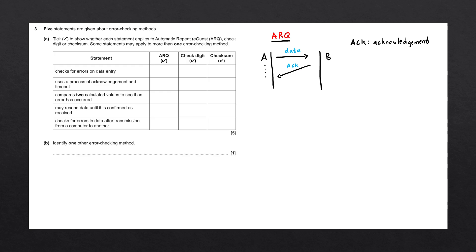If the timer expires, we get what's known as a timeout. If the timeout is reached, A is going to send back the exact same packet of data to B, as it assumes that B did not receive the correct information or the packet got lost during transmission. This process repeats until B sends back a positive acknowledgement before the timeout is reached.